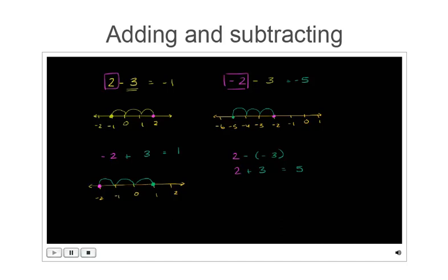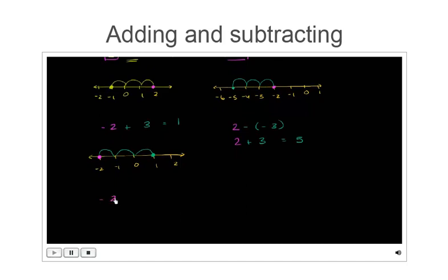Now let's try negative 2 minus negative 3. This might seem intimidating with all these negatives, but remember: subtracting a negative gives you a positive. So this is the exact same thing as negative 2 plus 3. We've already seen this — you start at negative 2, then go 3 to the right: 1, 2, 3.